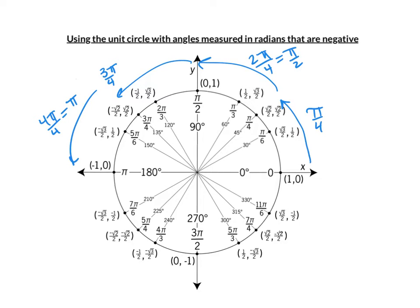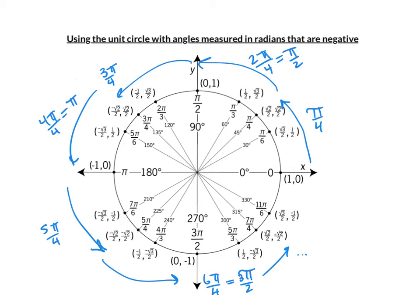And I can keep going. Another 45 degrees is 5 pi over 4. Another 45 degrees is 6 pi over 4, which is 3 pi over 2. And I can keep going — there's 7 pi over 4. And finally around to 8 pi over 4.